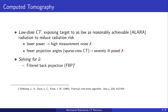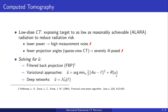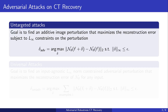A standard approach for CT reconstruction is filtered back projection, which involves linear filtering in Fourier space. Variational approaches find a minimizer of an energy which has a data consistency term and a suitable regularization such as a TV regularizer. Recently, many works also adopt different deep networks for CT reconstruction, ranging from fully-learned networks to model-inspired architectures. In this work, we analyze the stability of different classical and deep learning methods to CT recovery.